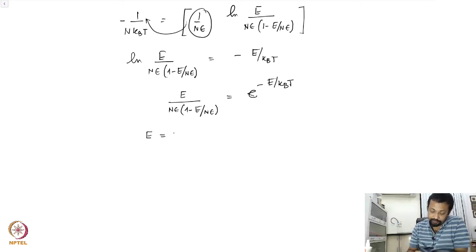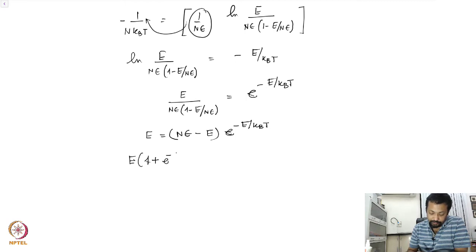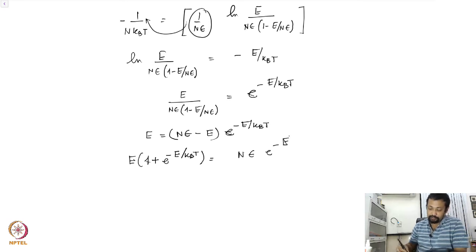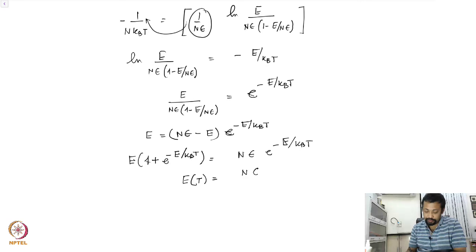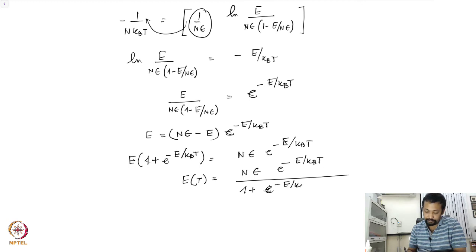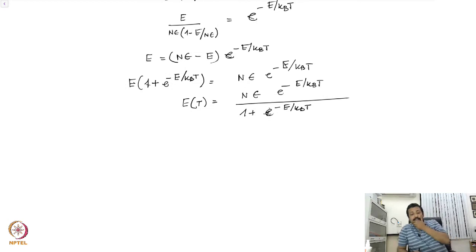Simplifying further, we can write (N epsilon minus E) / E equals e^(epsilon / k_B T), so that E times (1 plus e^(epsilon / k_B T)) equals N epsilon times e^(epsilon / k_B T) ... wait, rearranging: E times (1 plus e^(minus epsilon / k_B T)) equals N epsilon e^(minus epsilon / k_B T). Therefore the energy as a function of temperature is E(T) = N epsilon e^(minus epsilon / k_B T) divided by (1 plus e^(minus epsilon / k_B T)).